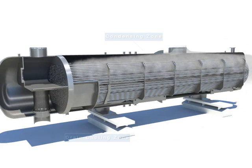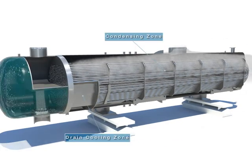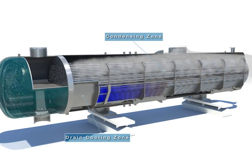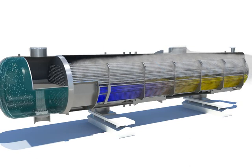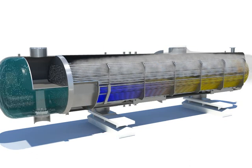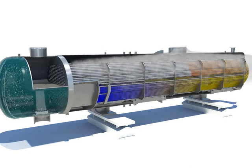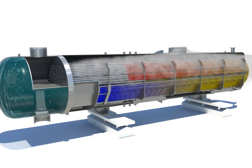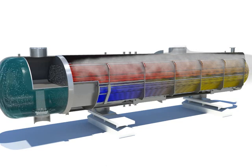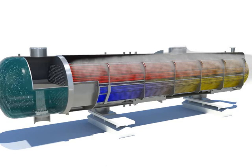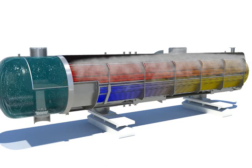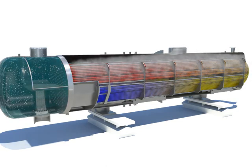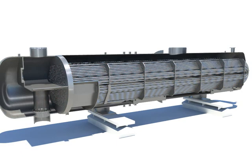The low-pressure feedwater heater consists of a drain cooling zone and a condensing zone. The drain cooling zone is located at the feedwater inlet, and the condensing zone has the largest heating area among the other heating areas of the feedwater heater.